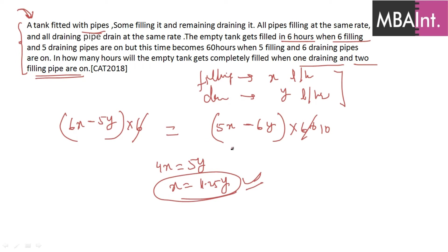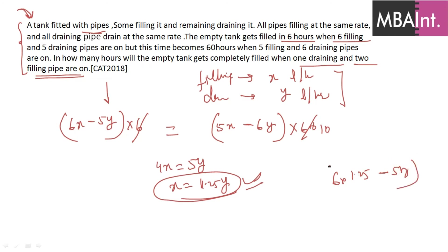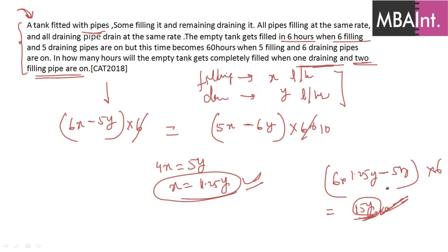Now finding the tank capacity: using the first condition with x = 1.25y — (6 × 1.25y − 5y) × 6 = (7.5y − 5y) × 6 = 2.5y × 6 = 15y. So tank capacity = 15y. Now they ask: one draining pipe and two filling pipes — net rate = 2x − y.